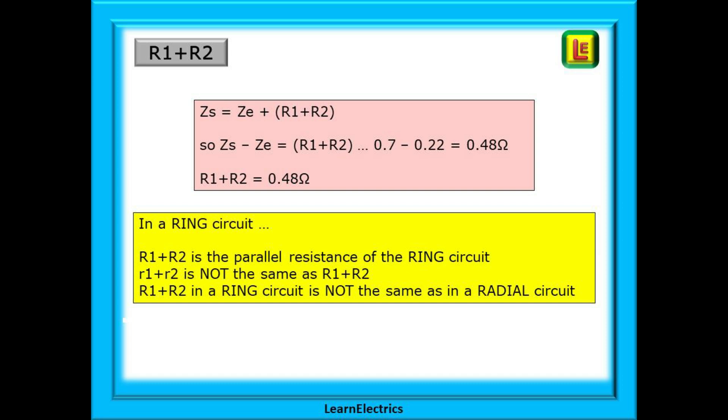We're talking about big R1 and big R2 here, the parallel resistance in a ring circuit. And in a moment we will use this to calculate little R1 and little R2, the end-to-end values of a conductor. Note that R1 plus R2 in a ring circuit is not the same as R1 plus R2 in a radial circuit. This is very important.